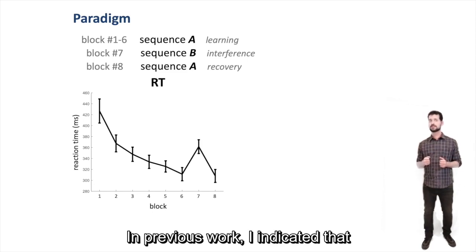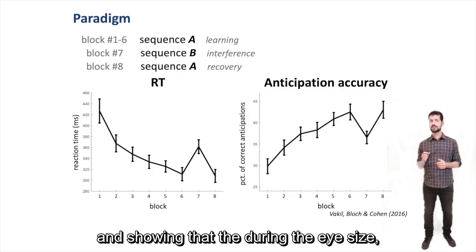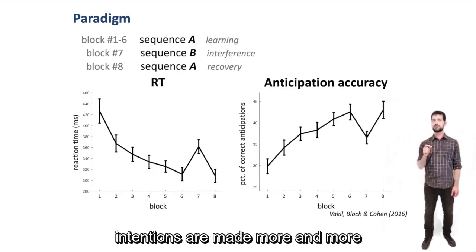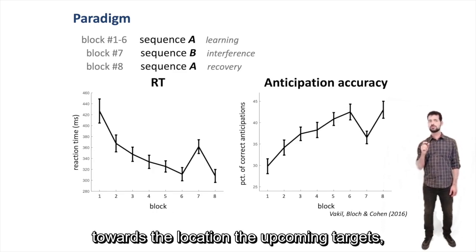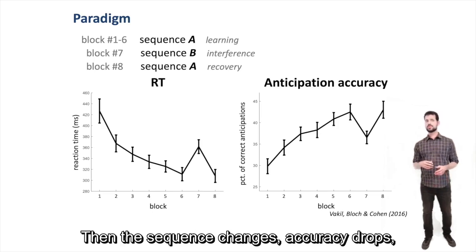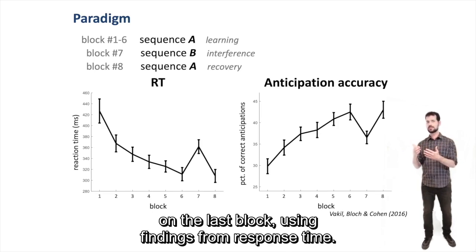In previous work, Eddie Bukit and his lab tracked participants' gaze during the task, and shown that during the ISIs, the 500 milliseconds between target and target, fixations are made more and more towards the location of the upcoming target as participants grow familiar with the sequence. Then when the sequence changes, the accuracy drops, and then restores again on the last block, mirroring findings from response time.